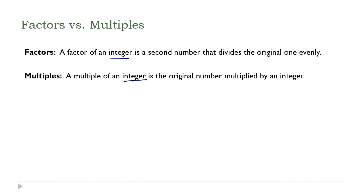A factor of our number is a second number that divides the first one evenly. And a multiple, on the other hand, you take the original number, and instead of dividing it by an integer, you're going to multiply it by an integer.